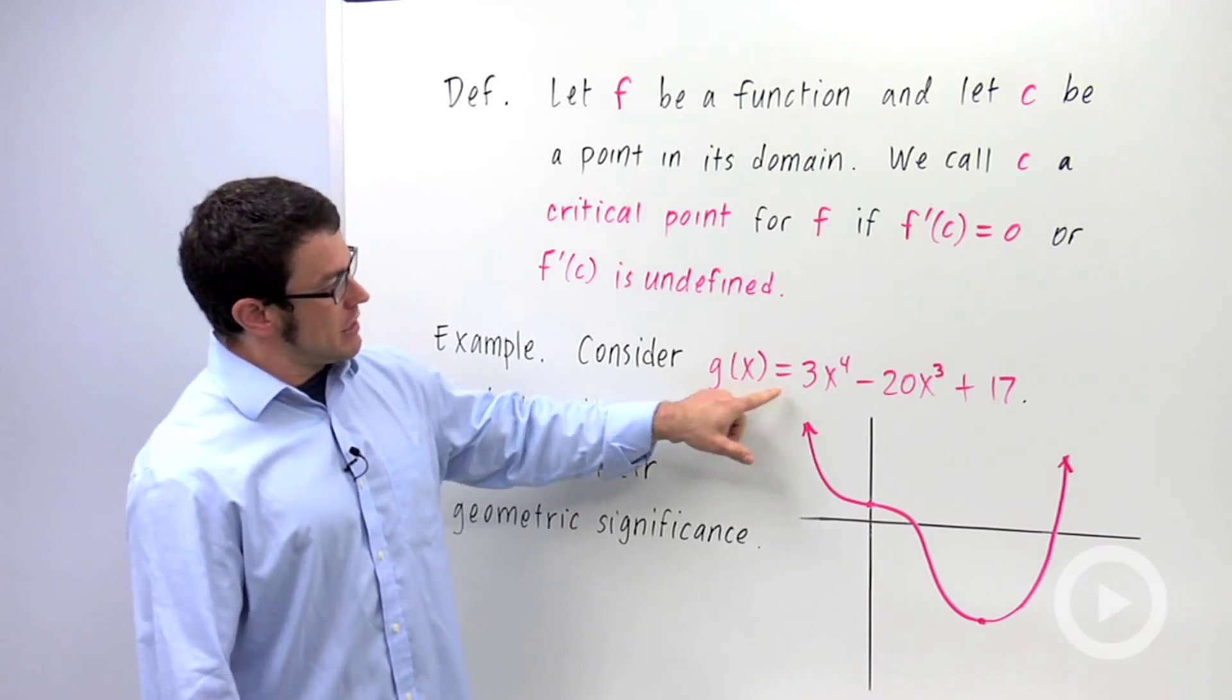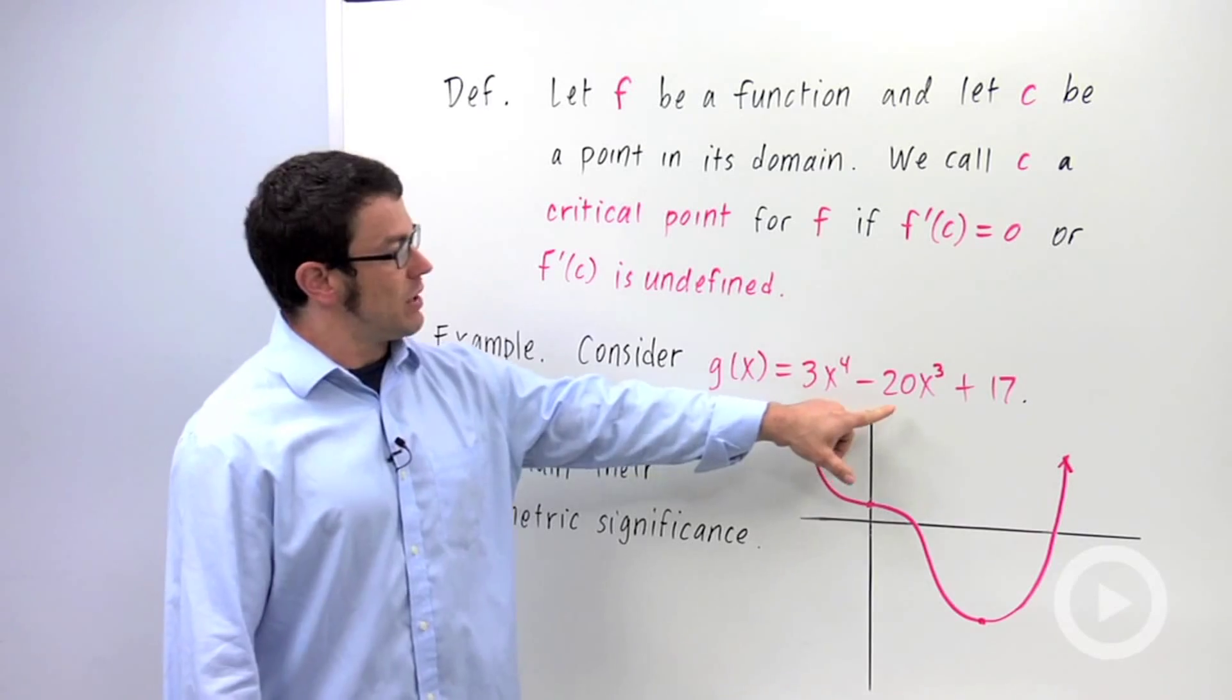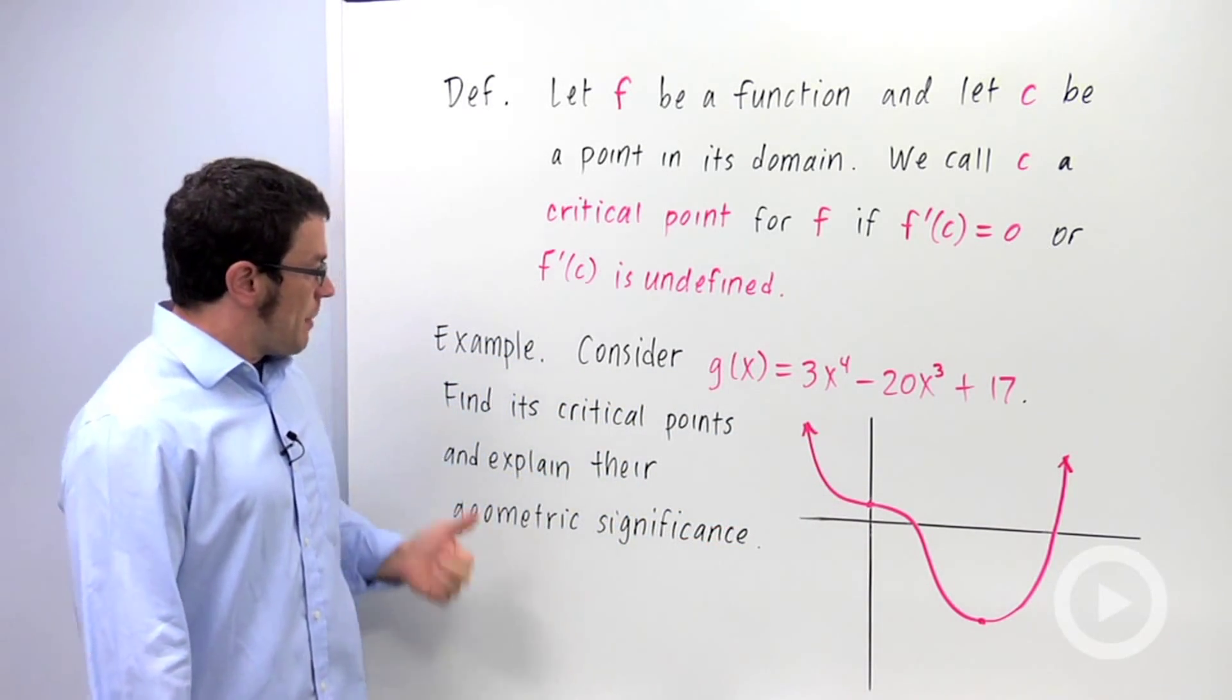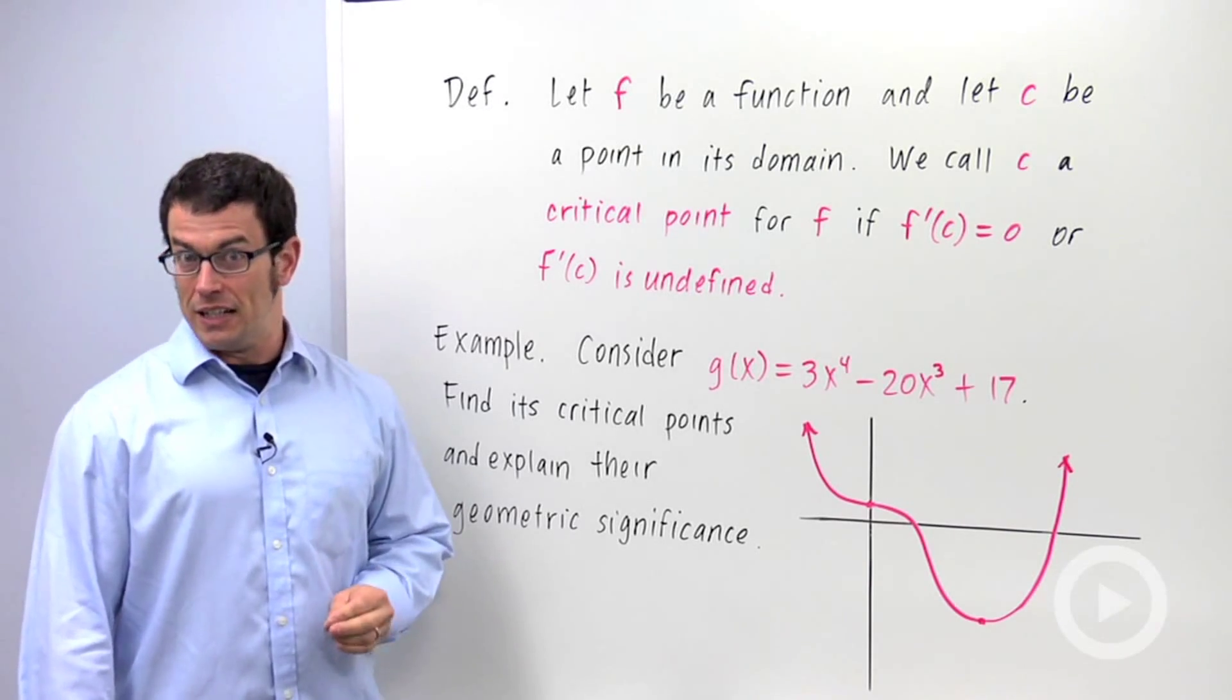Consider the function g of x equals 3x to the fourth minus 20x cubed plus 17, and I have that function graphed here. I'm asked to find the critical points and explain their geometric significance.